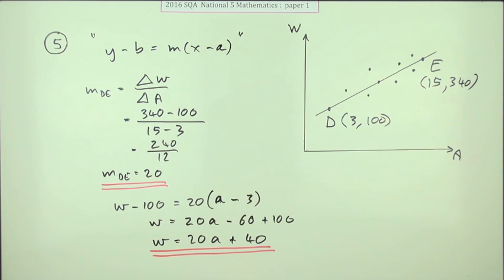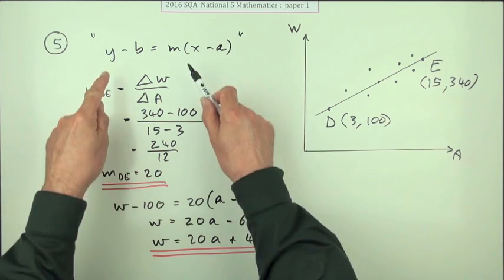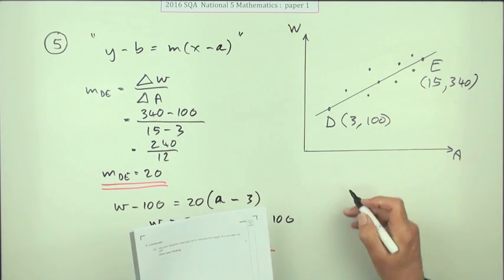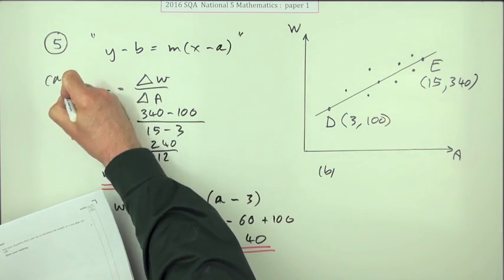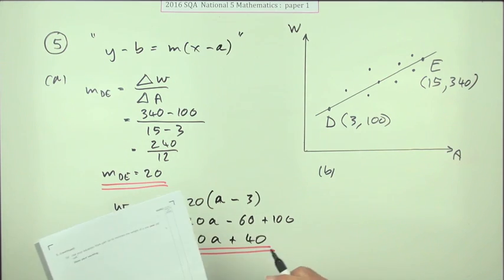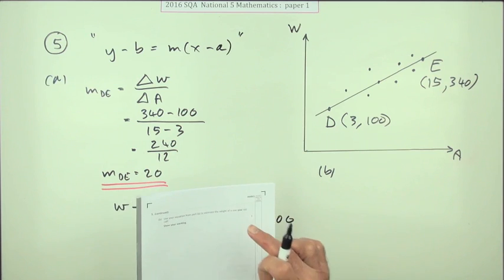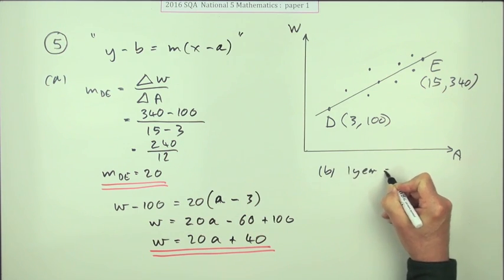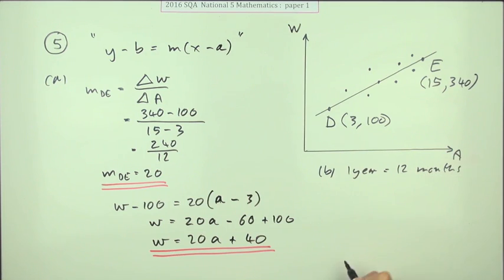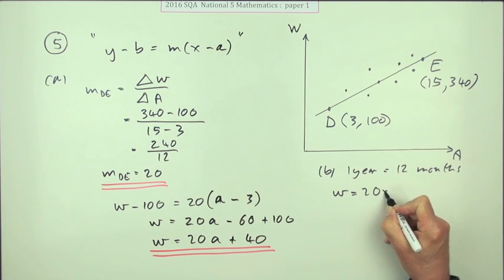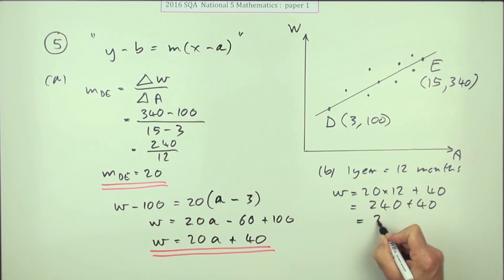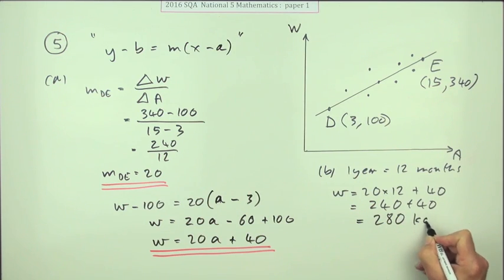You might want to use capital letters since they appear in the diagram, but small letters from equations in general are fine. Now for part b: use your equation to estimate the weight of a one-year-old calf. One year equals 12 months, so the weight would be 20 times 12 plus 40, which is 240 plus 40, giving 280 kilograms.